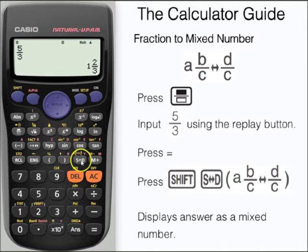If we press shift and then the same button again, SD, we can change that back to the improper fraction, 5 thirds.